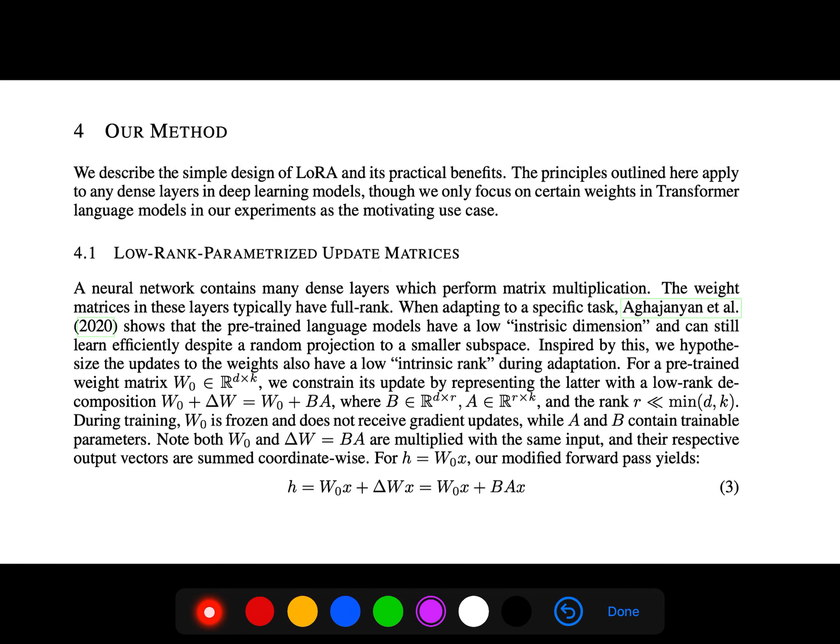So this low rank update matrices, the weight matrices in these layers typically have full rank. For example, a neural network contains many dense layers.